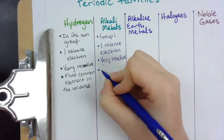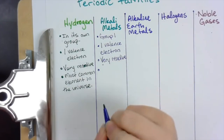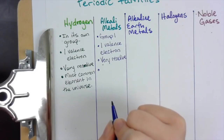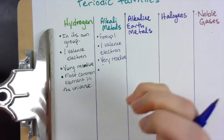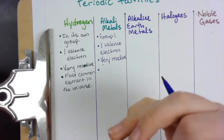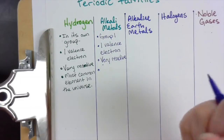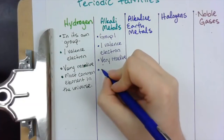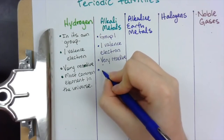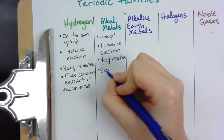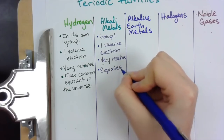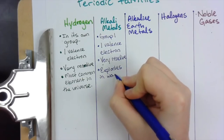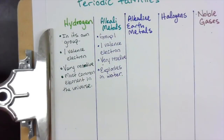One other thing that's good to know about alkali metals is that they are very reactive with water. If you take a big block of something like potassium and drop it in water, it will start creating sparks and heat — it might even explode. So we're going to write that down: explodes in water. That's part of what we mean when we say something is very reactive — sometimes you get those kind of violent reactions.